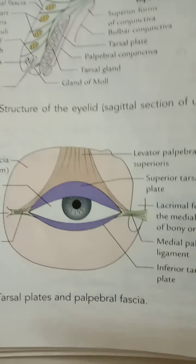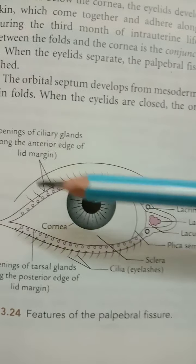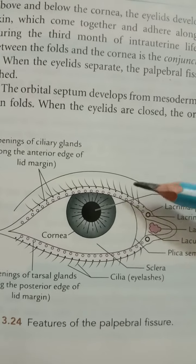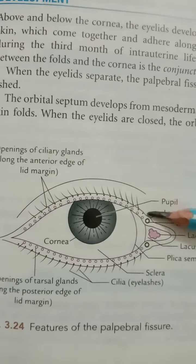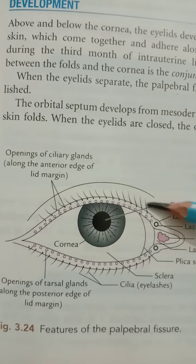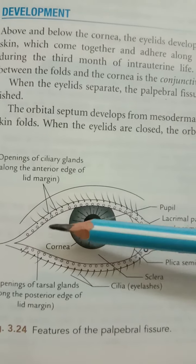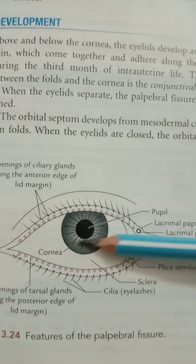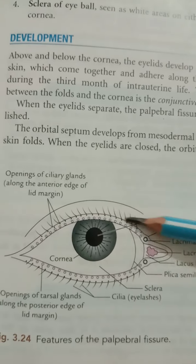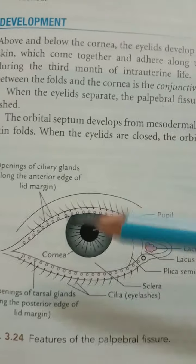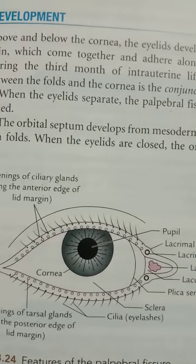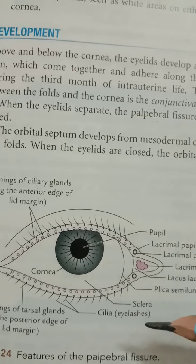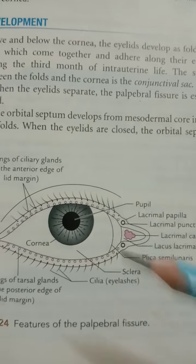Apart from the tarsus, there are several glands present in the eyelid. First, the large sebaceous gland also called the Zeis gland, at the lid margin associated with the cilia. Then the modified sweat gland called Moll's gland, at the lid margin closely associated with the Zeis gland. The sebaceous or tarsal glands, also known as the Meibomian glands, have openings present in both the upper and lower eyelids.